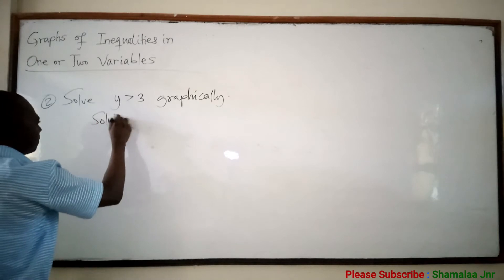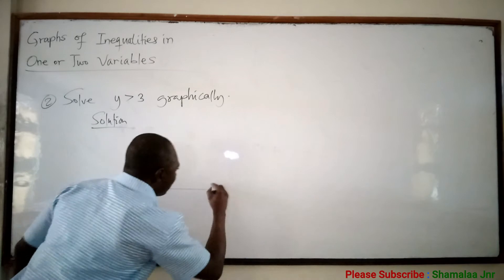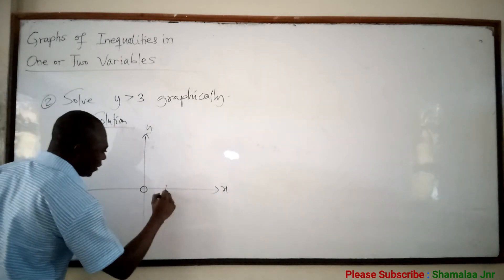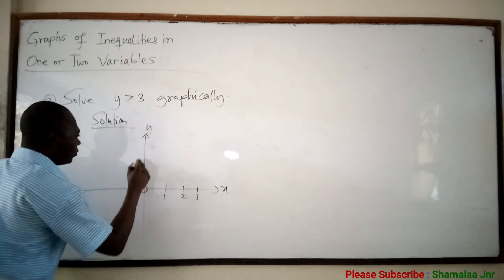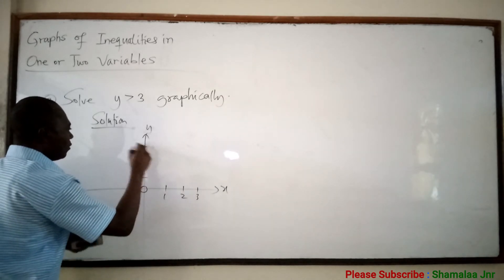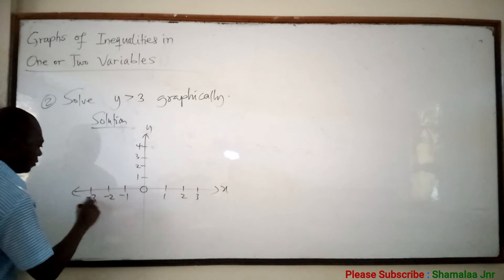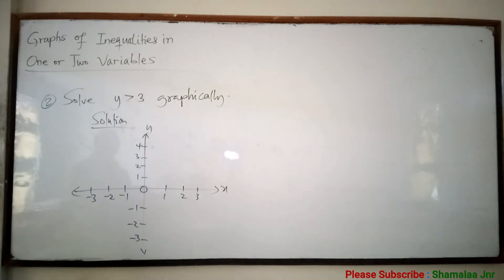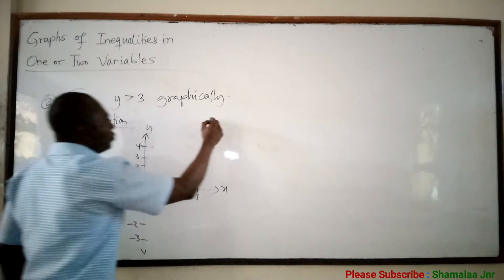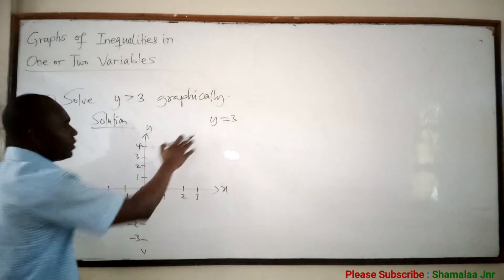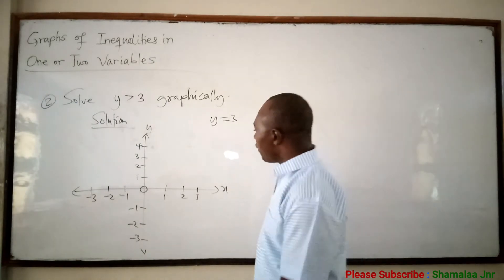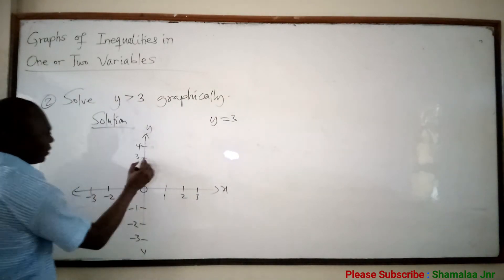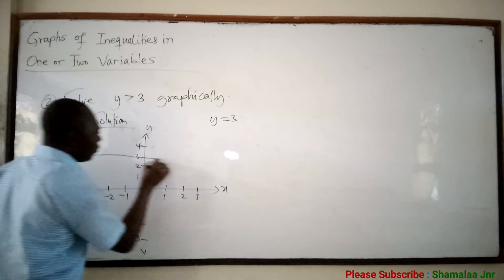Solution. Let's draw the x-y plane. I say y is greater than 3. This is 0. You can have 1, 2, 3 on each axis. Now, let's say y should be greater than 3. You have to convert this inequality into an equation: y equal to 3. Then you just draw the graph of y equal to 3, which means go to the y-axis and draw a line to pass through y equal to 3.